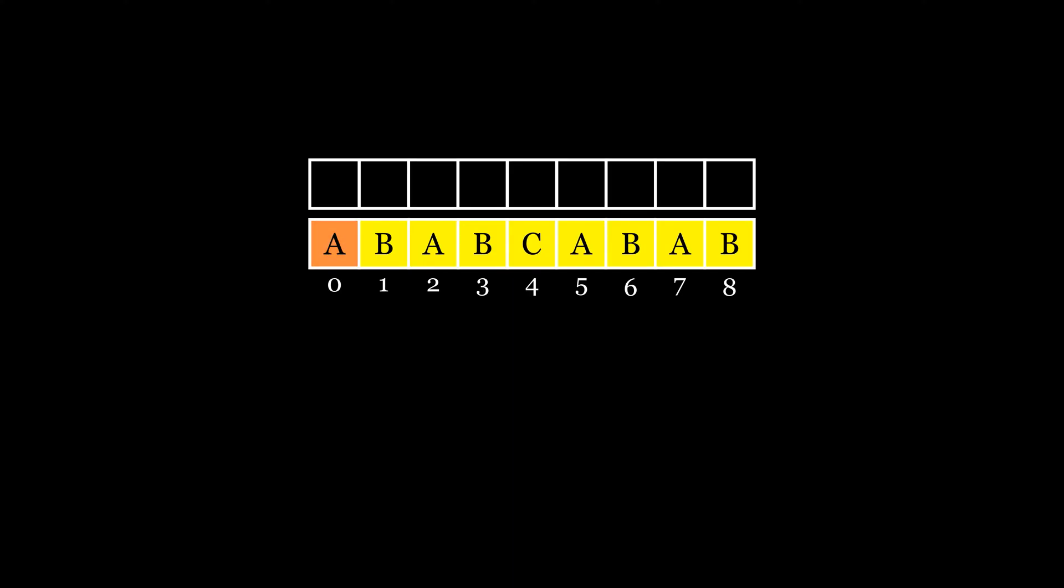Here A is not repeating anywhere before it, so we will put a zero. Same with B. Now this A is repeating again with the first letter, so we will put one in the table. This AB is repeated again with the first two letters, so we will add two. This C is not repeating in the prefix, so we will add zero, and we will repeat the same process to find the longest prefix suffix table.